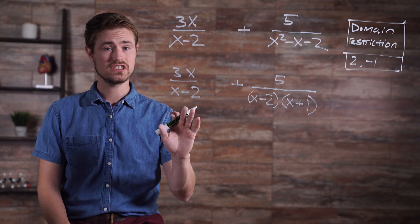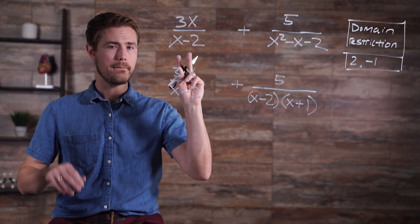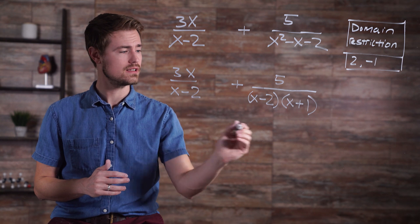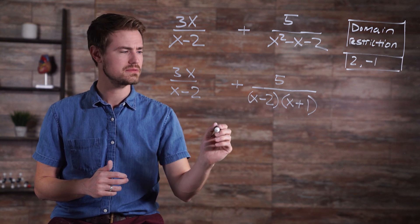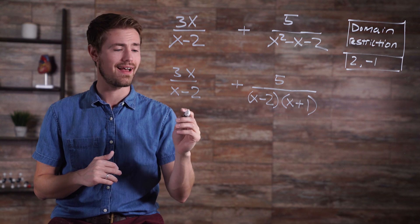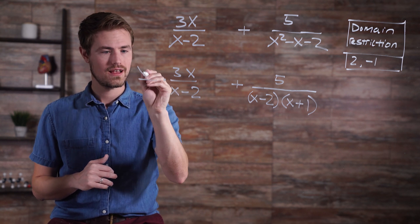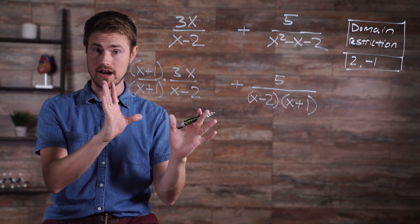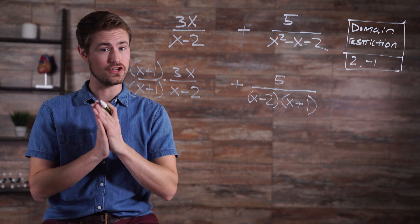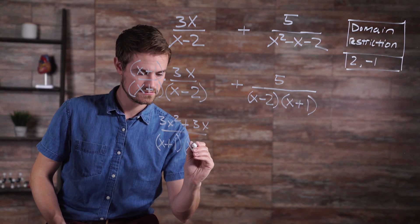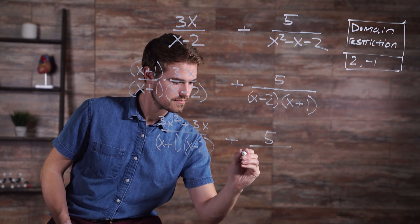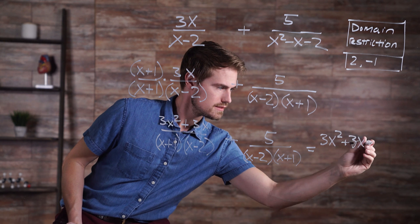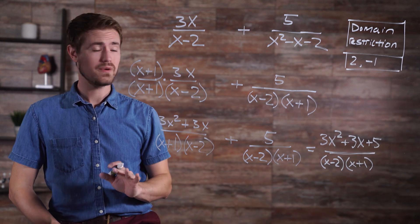Alright, now we need to adjust the first expression by multiplying by the factor needed to match the least common denominator. So, if we want our first term here to match this term over here in the denominator position, we're going to multiply by x plus 1 in the numerator and the denominator. Now, we're going to rewrite the expression as a fraction and simplify the numerator. And now we have our answer.